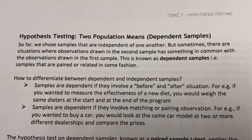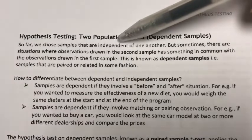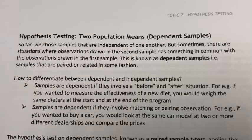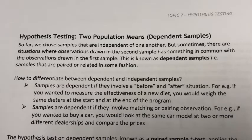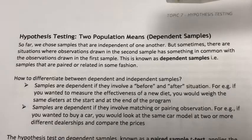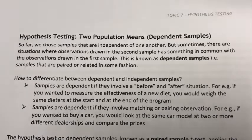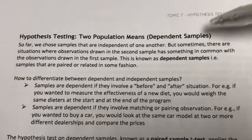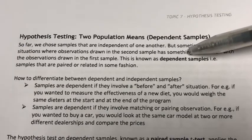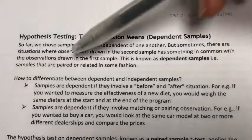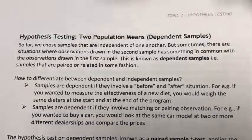Now before this, you've been introduced to samples that are independent of each other — in other words, they come from populations that have nothing to do with each other. However, sometimes there are situations where observations drawn in one sample may have something in common with observations drawn in the second sample. This is known as a dependent sample; in other words, the samples are paired or related in some manner.